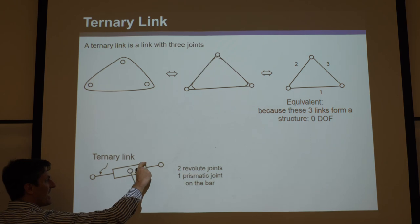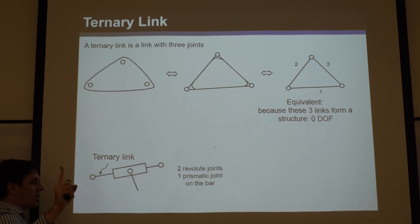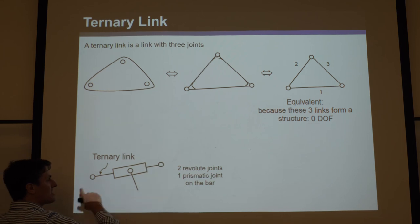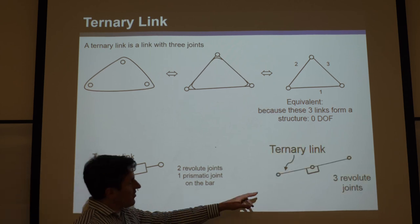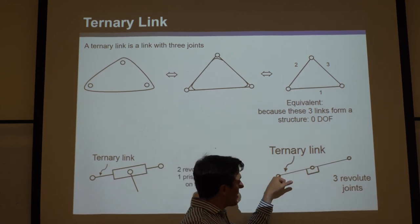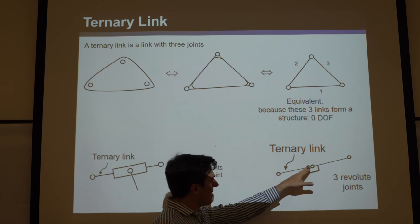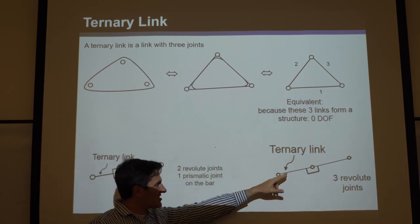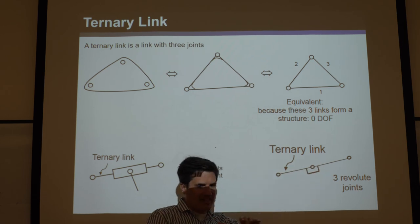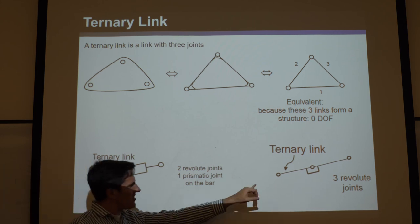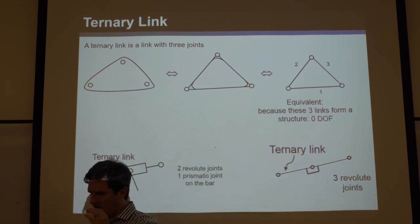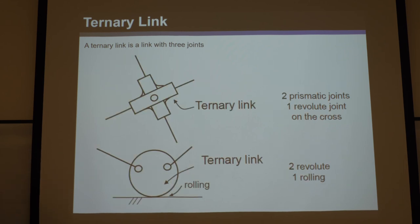Another ternary link example: a box with a prism sliding joint to a line counts as one joint, and two revolute joints at its ends make three total — that's a ternary link. Similarly, a bridged link that looks like two binary links connected by a revolute joint is actually one rigid body due to the bridge, with three revolute joints total — making it a ternary link.